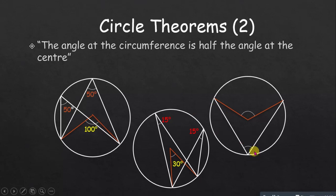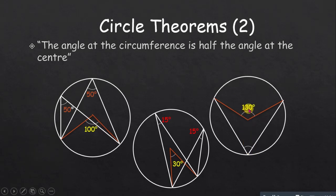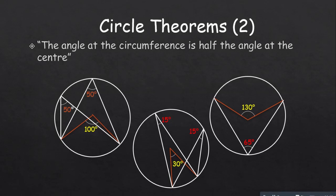The angle at the circumference is half the angle at the center. So if the center angle is 130 degrees, the circumference angle is 65 degrees — you divide the center angle by two. Once you get this property clear it doesn't matter how the diagram is twisted; you'll be able to solve it.